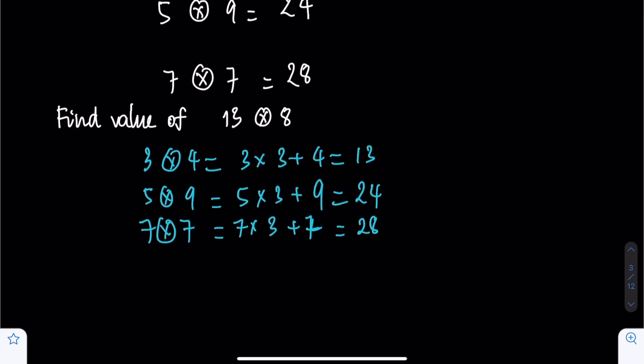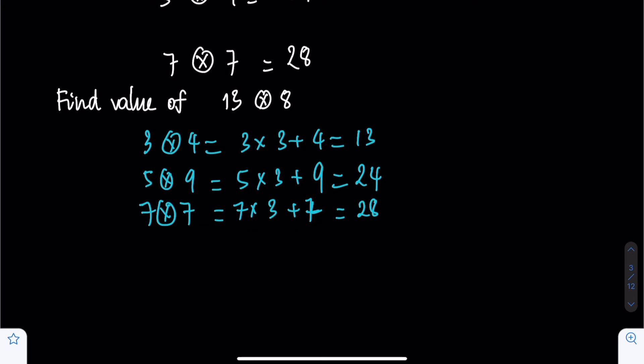So 13 times circle 8, our answer is 13 times 3 plus 8, equal to 47. 47 is the answer to the question.